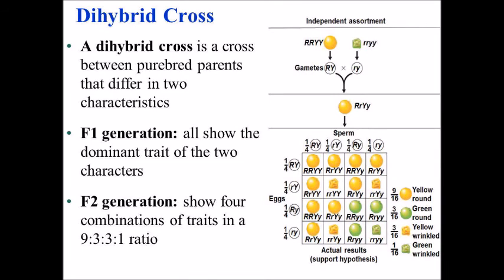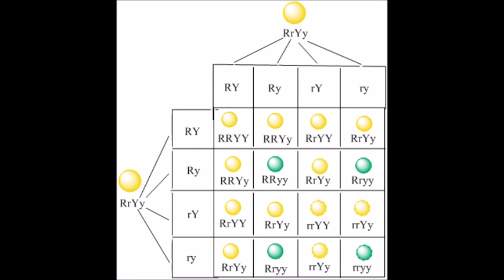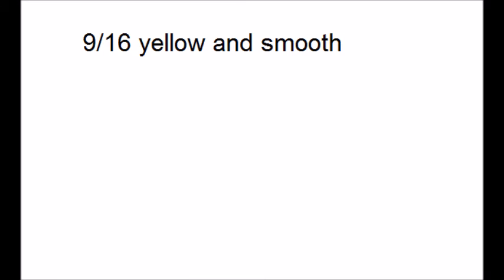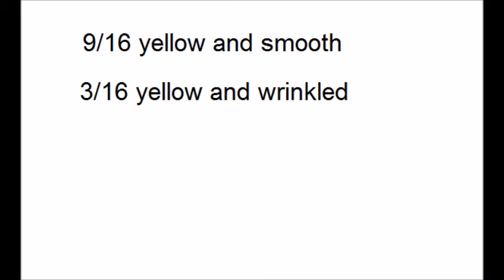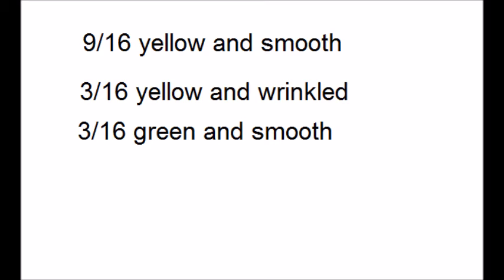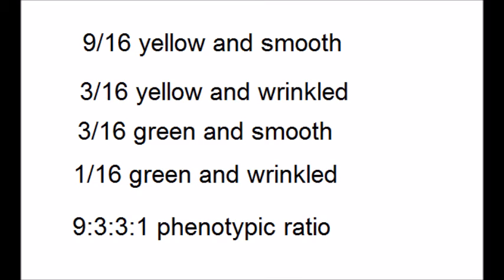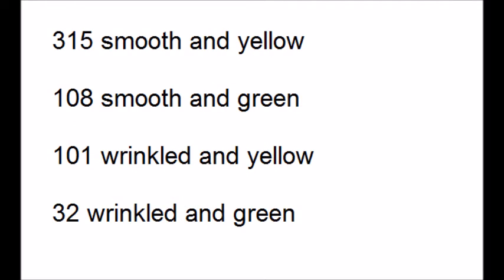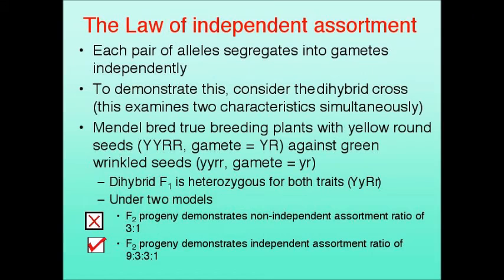The different genotypes produced are shown here. If traits are inherited independently of each other, it can be predicted that for every 16 peas produced there should be 9 smooth and yellow, 3 yellow and wrinkled, 3 green and smooth, and 1 green and wrinkled. Mendel's results were very close to this ratio, confirming that the traits were inherited independently of each other. Based on this data he formulated the law of independent assortment. As we will see in a future video, this law does not always hold true.